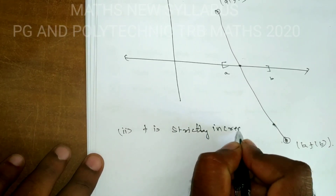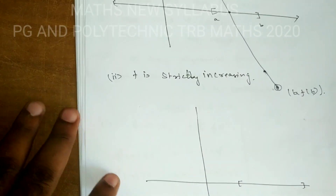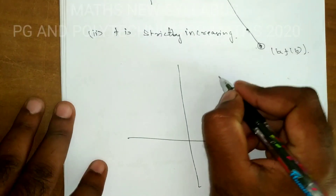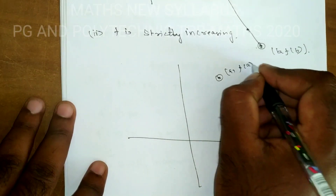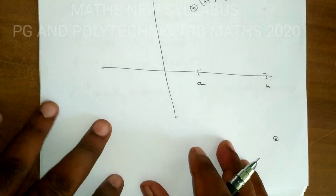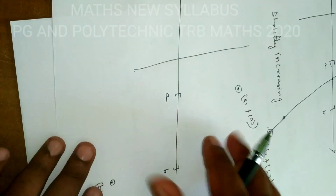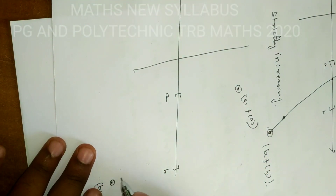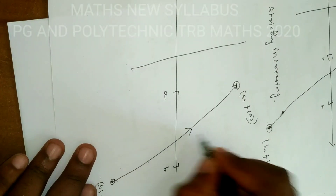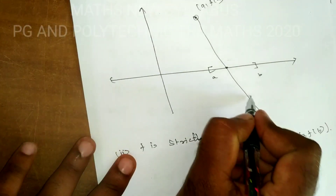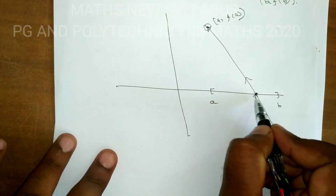Similarly, for the case where f is strictly increasing: this is the interval [a, b]. This is f(a) and this is f(b). If f is strictly increasing or strictly decreasing, the graph crosses the x-axis in the interval exactly one time.